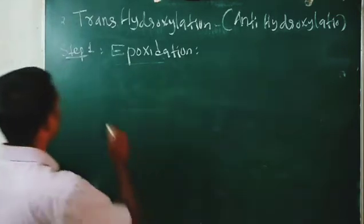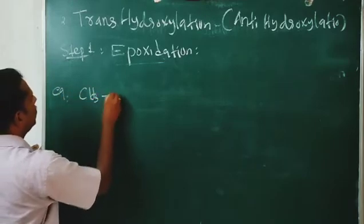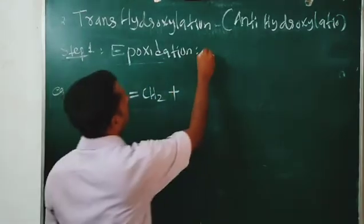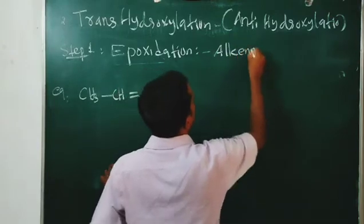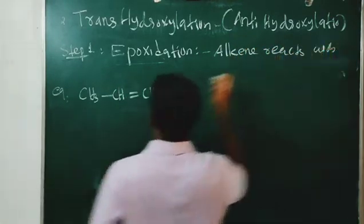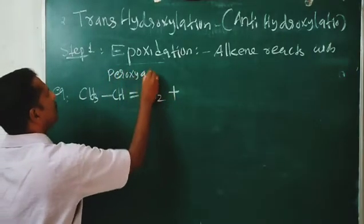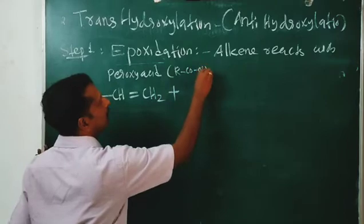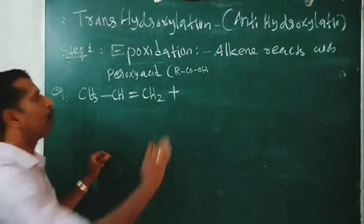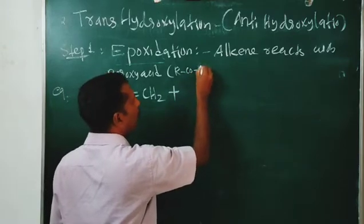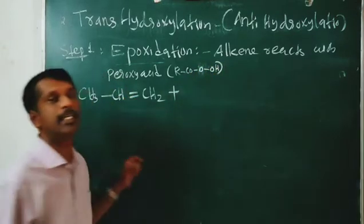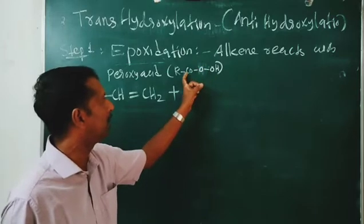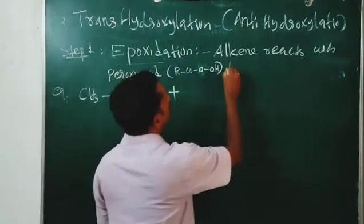When an alkene such as CH3CH=CH2 reacts with a peroxy acid — the general formula of carboxylic acid is RCOOH, but peroxy acid is RCOOOH — the alkene reacts with the peroxy acid to give a three-membered cyclic ether.